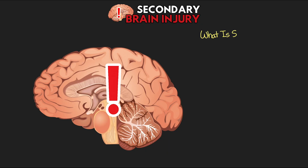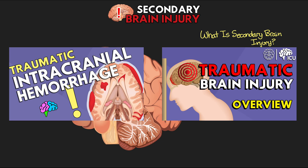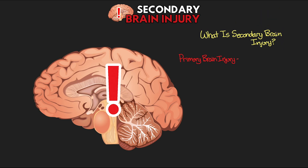What I want to do here is start off and really explain what a secondary brain injury is. In order to understand that, we need to make sure you understand the primary brain injury, which I talked about in the last two lessons. The primary brain injury is going to be damage that is a result of that direct injury to the brain and the vasculature at the time of the impact.